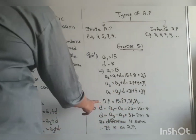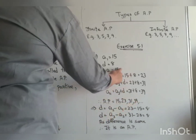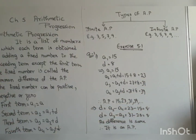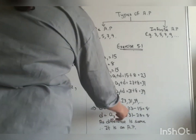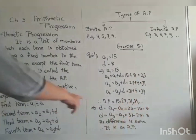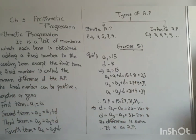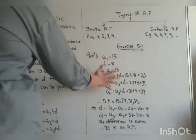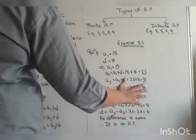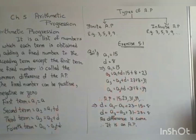So the A.P. formed is 15, 23, 31, 39, dot dot dot, because how many kilometers is not specified. Now to check whether it is an A.P. or not, we find the difference. A2 minus A1 is 23 minus 15 equals 8. A3 minus A2 is also 8. As the difference is the same, we can say that it is an A.P.